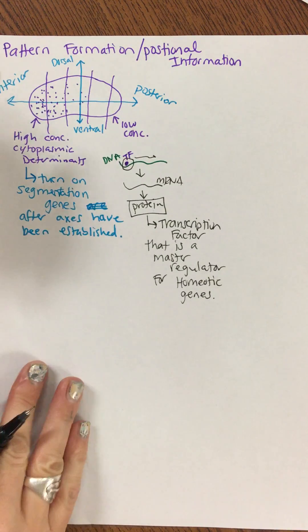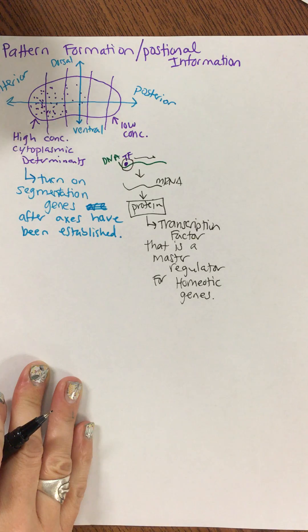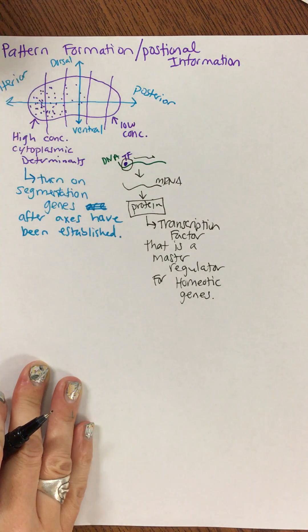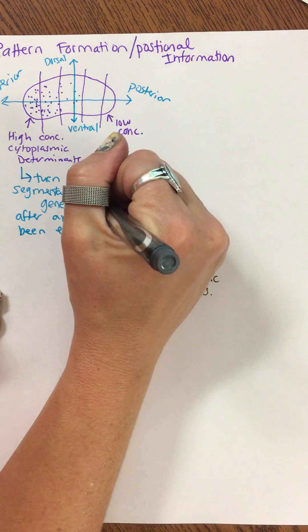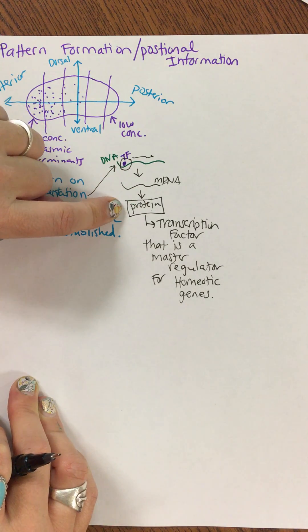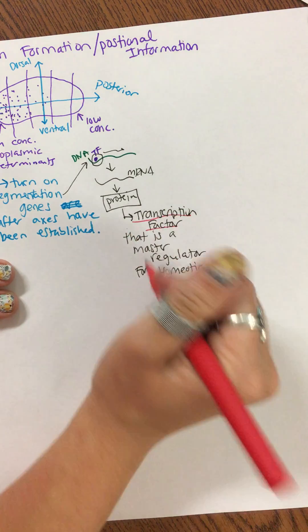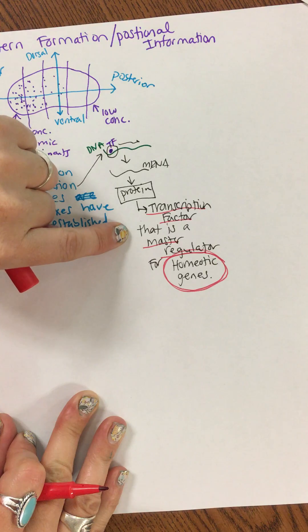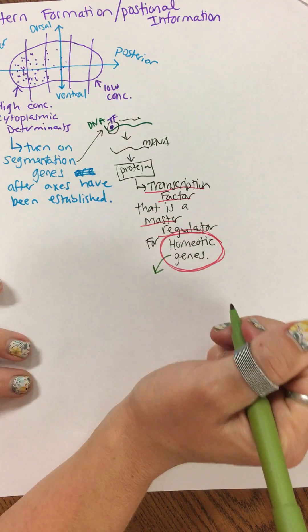So to summarize: there's a high concentration of cytoplasmic determinants in one area and a low concentration on the other side, which establishes the anterior-to-posterior axes. Once the axes are established, the cytoplasmic determinants act as transcription factors, turning on segmentation genes. These segmentation genes, drawn right here, code for a protein that acts as a transcription factor — a master regulator for homeotic genes. So segmentation genes code for master regulators of homeotic genes.